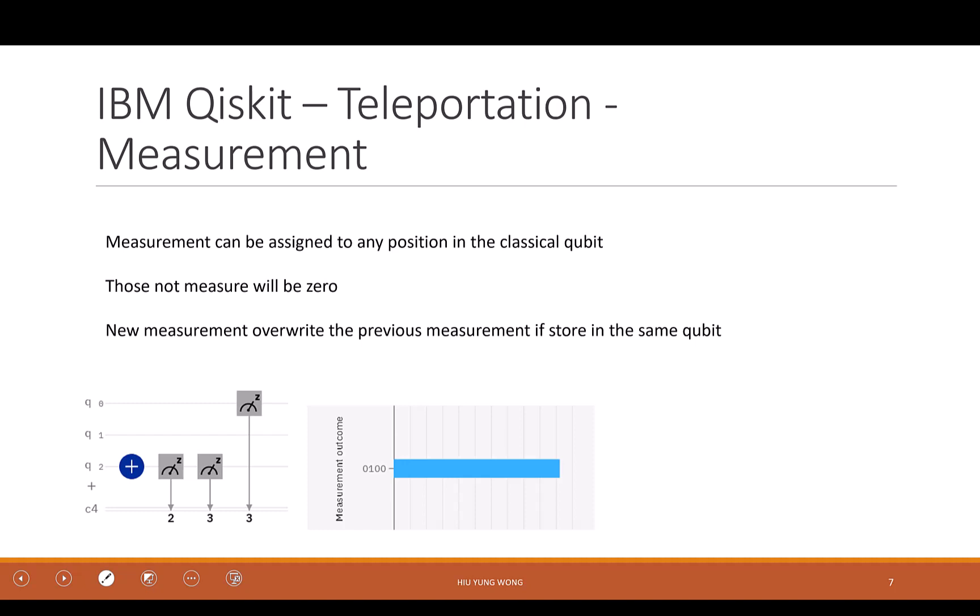It's about the IBM Qiskit, about the measurement. So in order to do quantum teleportation in IBM Qiskit, you definitely need to do a lot of measurement. The first thing I want to talk about, what is the meaning of the measurement in IBM Q?